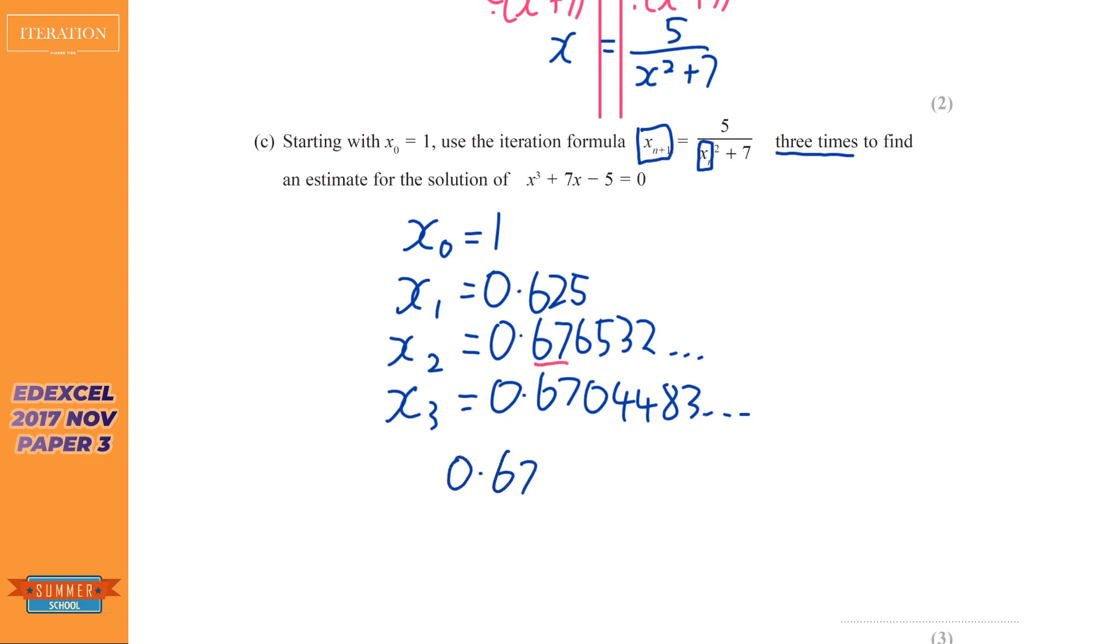So our approximate solution is 0.67, because the six and the seven have remained consistent, probably on the mark scheme it will give four decimal places, goodness knows why. But as long as you use that third one, because it asks us to do it three times to estimate the solution, so it's roughly going to be x equals that.